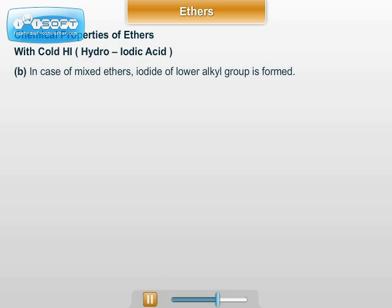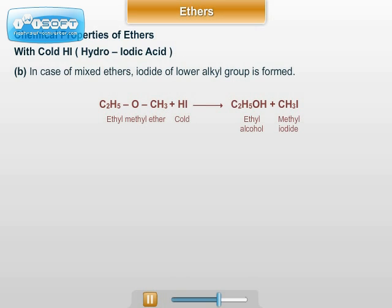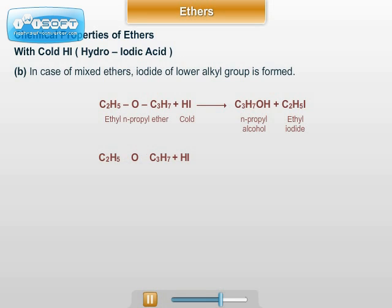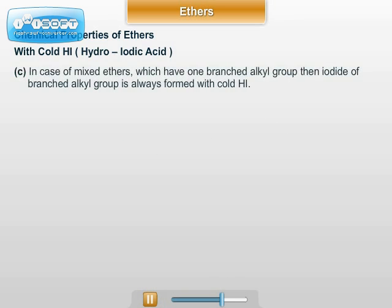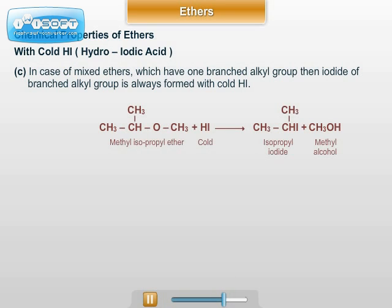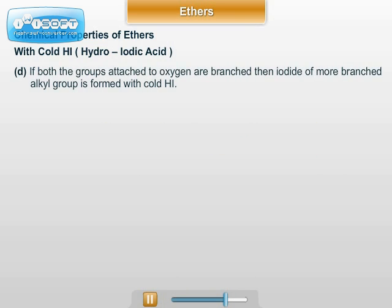Number two: in the case of mixed ethers, the iodide of the lower alkyl group is formed. Number three: in the case of mixed ethers which have one branched alkyl group, the iodide of the branched alkyl group is always formed with cold HI. And number four: if both the groups attached to oxygen are branched, then the iodide of the more branched alkyl group is formed with cold HI.